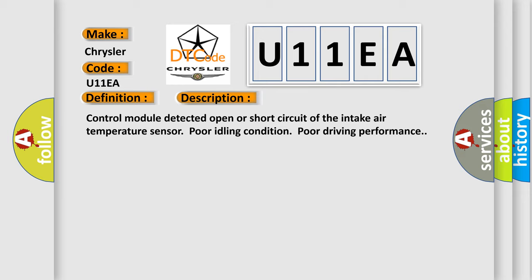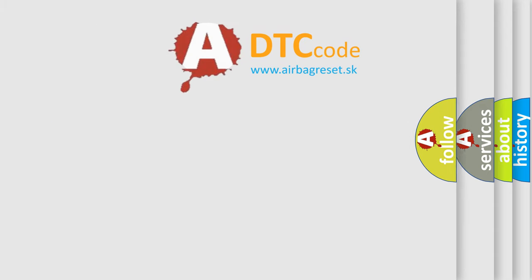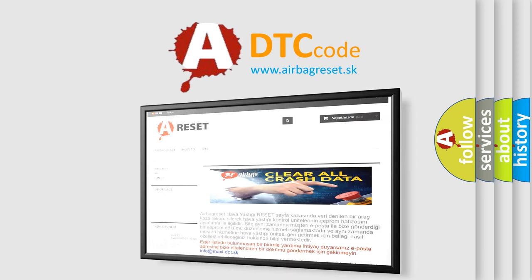This diagnostic error occurs most often in these cases. Using a scan tool, check current data. Check the harness between the sensor and control module. Connect and check for poor contacts. Faulty IAT sensor. The Airbag Reset website aims to provide information in 52 languages. Thank you for your attention and stay tuned for the next video. Bye.